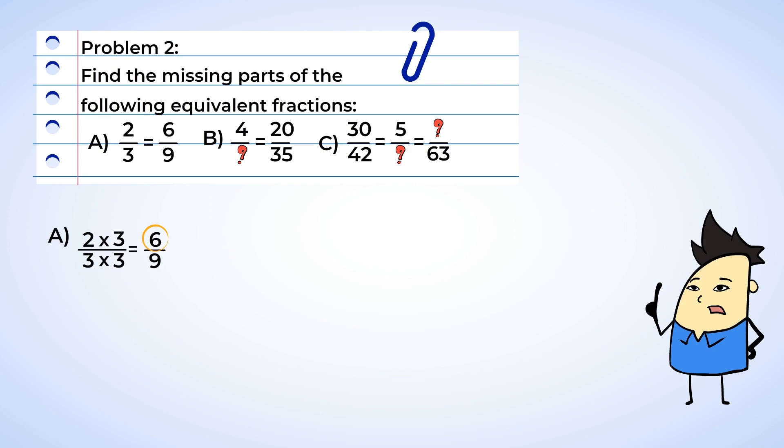Okay, moving on to part B. Now this example has both numerators. And so four times what is twenty? Five. Since we needed to multiply the numerator by five, we also have to multiply the denominator by five as well. And what times five is thirty-five? Well, seven. The denominator is seven. We could have also used division to find that answer as well, couldn't we? Thirty-five divided by five is seven. How neat.